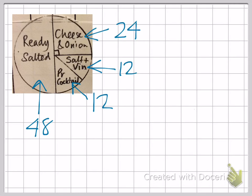So altogether we could work out how many people are in this group that have been asked the question. We've got 24, 12, 12, and 48.